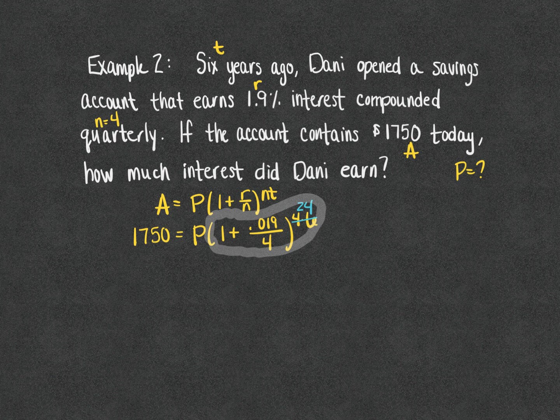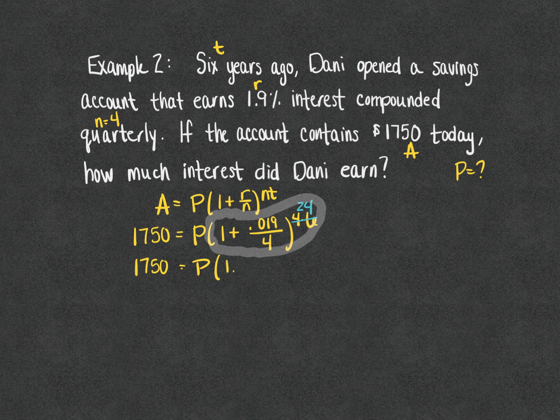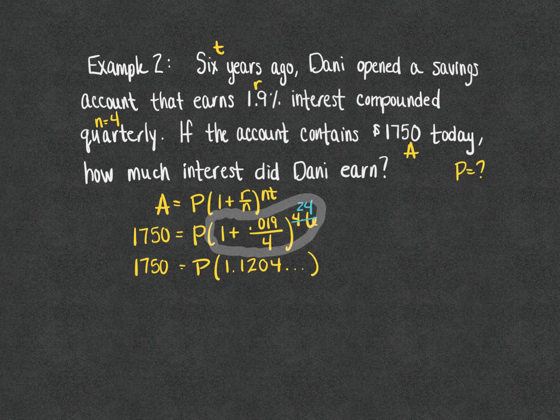That is a number that's a decimal that's got a lot of decimal places that come after it. I am just going to write down some of them: 1.1204, and then there's several others, 4968. I'm not going to write them all out.